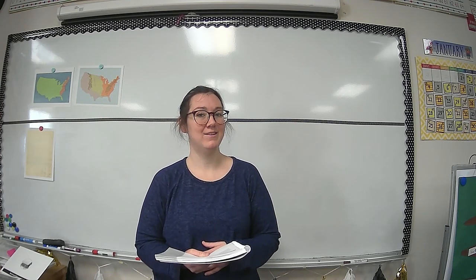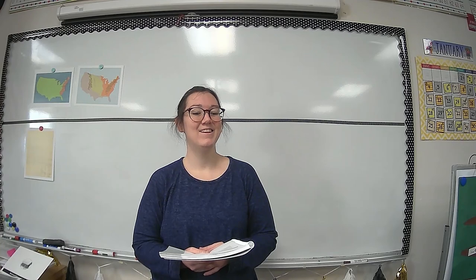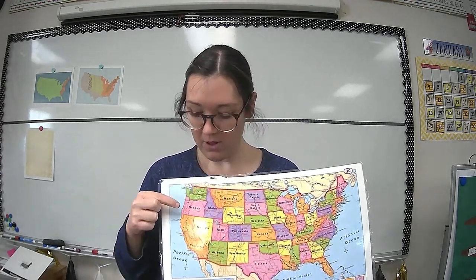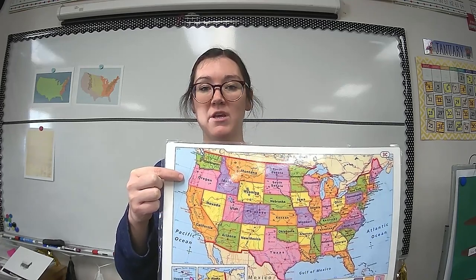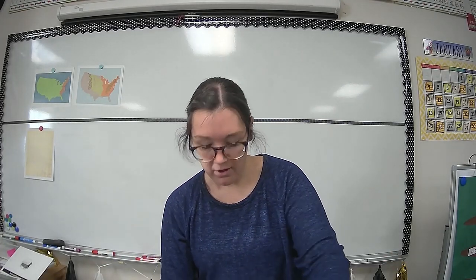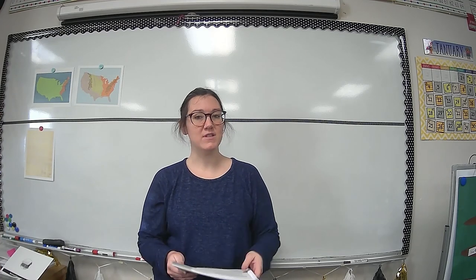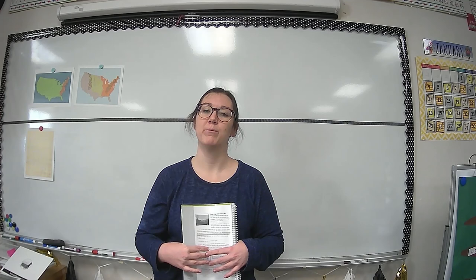Where did the family decide to settle? They settled in the state of Oregon. On our map, they went all the way from the east coast to Oregon, shown in pink on our map here. Now turn to the person helping you today and tell them: do you think that life was easy or difficult for the Morgans after they were able to settle in Oregon?